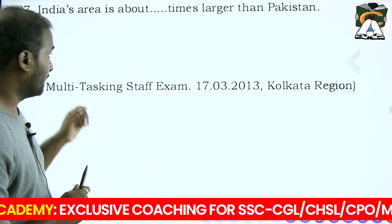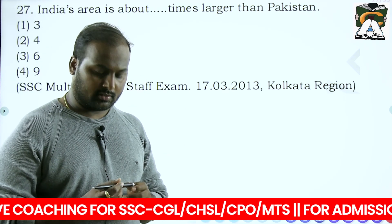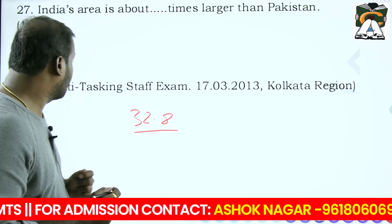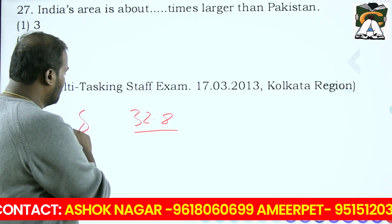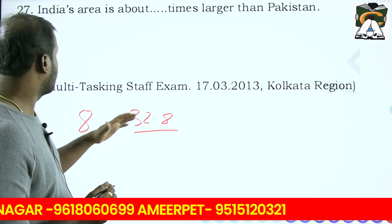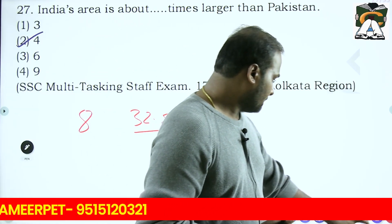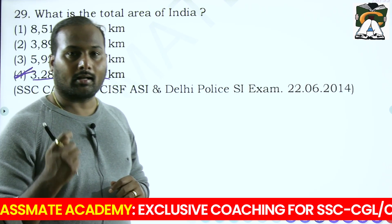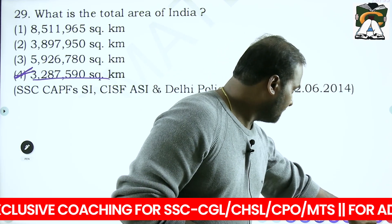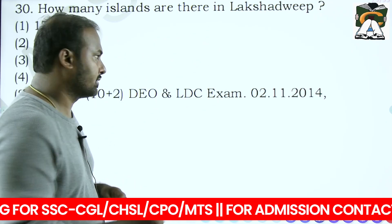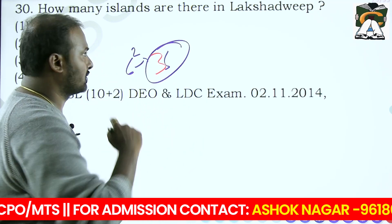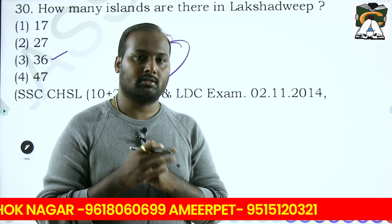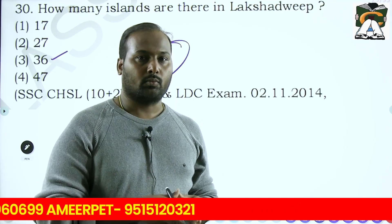'India's area is about how many times larger than Pakistan?' India's area is 32.8 lakh square kilometers. Pakistan's area is about 8 lakh square kilometers, so India is approximately 4 times larger than Pakistan. The total area of India is 32.8 lakh square kilometers - remember this precisely. Lakshadweep has 36 islands - remember it as 'six square' making 36. These are the first 30 questions; in the next session we will discuss another 30 questions from the same chapter covering 1997 to 2023.